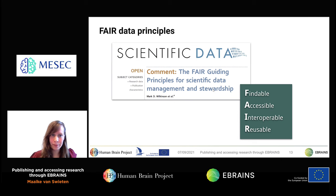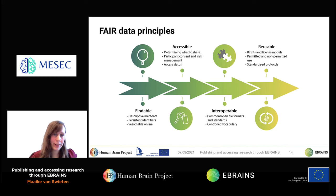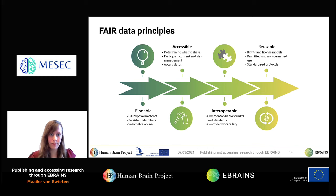So how do we make data FAIR? Data becomes more findable by assigning persistent identifiers such as a DOI and including descriptive and standardized metadata. Accessibility can be increased by outlining what is shared and how it can be accessed. Data becomes more interoperable when open file formats are used and terms and keywords are controlled and standardized. Reuse can be facilitated by accompanying data with a license to define the terms and conditions and to standardize protocols.